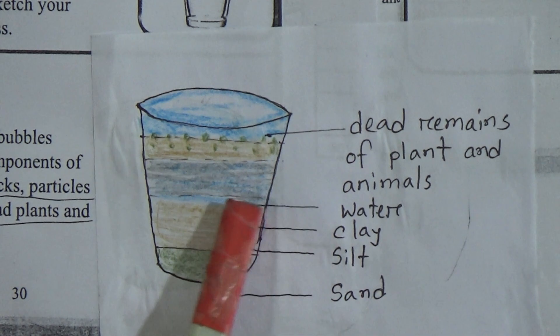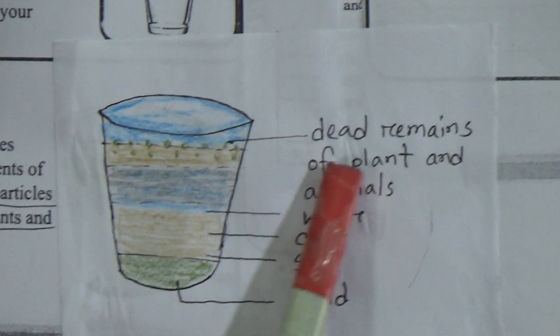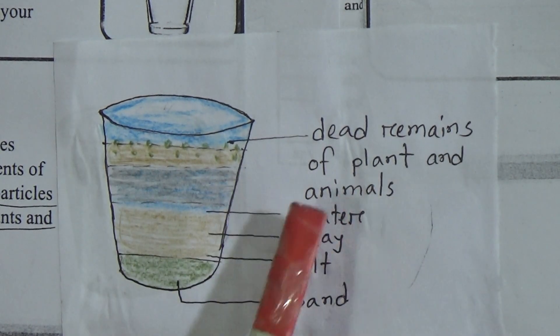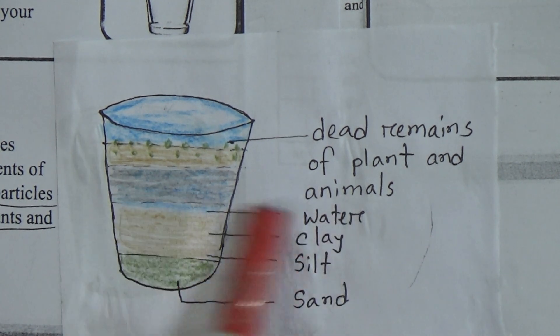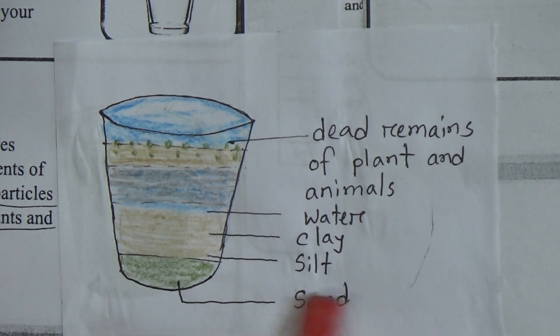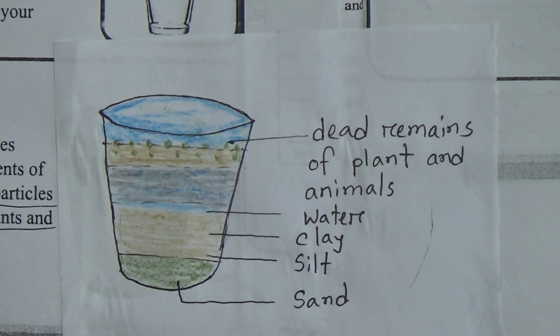Soil consists of rock particles of sand, silt, and clay; remains of dead plants and animals; water; air; etc. In the figure, this part shows the dead remains of plants and animals. This layer is water, this layer is clay, this layer contains silt, and this layer contains sand. These are the components of soil.